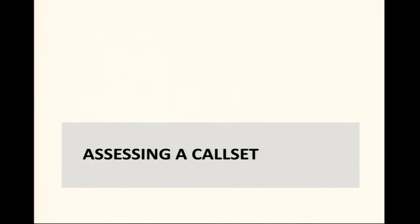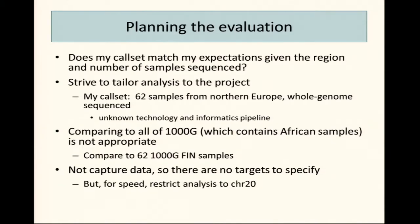Aside from manipulating variant call files — subsetting and combining them — you want to be able to assess them for quality. One way involves comparing your dataset to another dataset which you think is good. Absent that, there are expectations based on biology, based on divergence. For those kinds of questions, I refer you to the GATK forum or other forums about sequencing in species other than Homo sapiens.